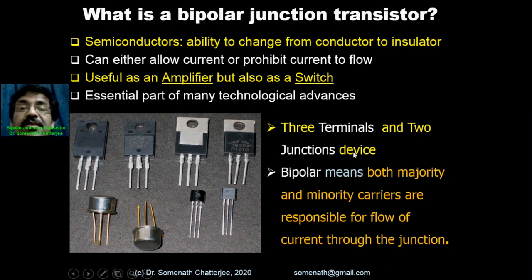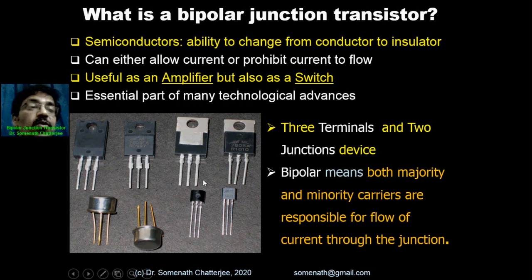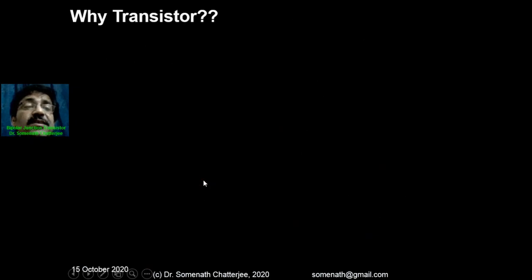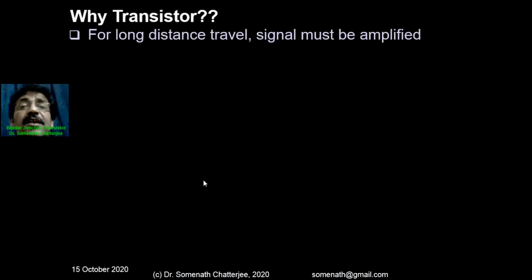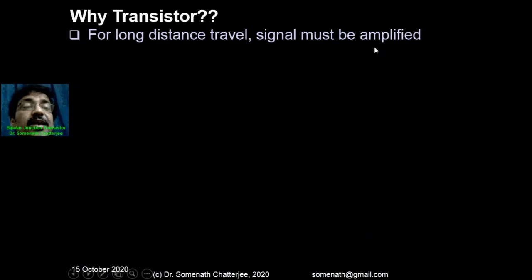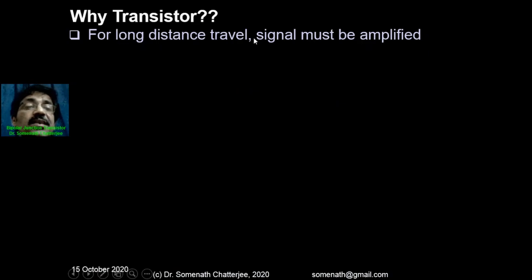The transistor has 3 terminals and 2 junctions. Bipolar means both majority and minority carriers are responsible for the flow of charges. Why transistor? For long-distance travel, the signal must be amplified; otherwise it will be distorted. That is one of the objectives to use the transistor in a circuit.